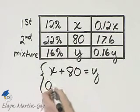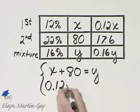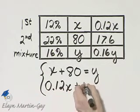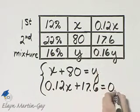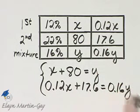This amount, that's 0.12X plus 17.6, should equal 0.16Y.